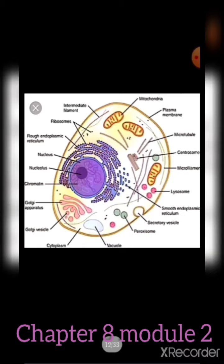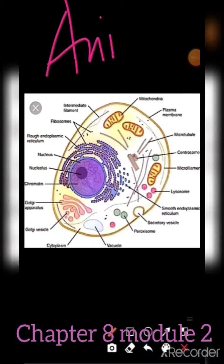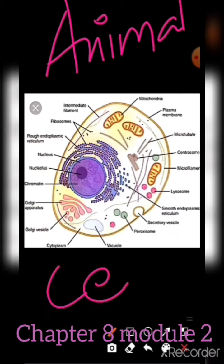Here is the animal cell shown in the diagram — this is the type of cell we humans have. It contains different cell organelles: the purple structure is the nucleus, along with endoplasmic reticulum, ribosomes, mitochondria, plasma membrane, lysosomes, peroxisome, vacuole, and cytoplasm. These will be discussed one by one in further modules.